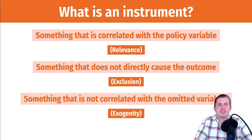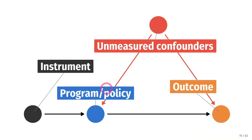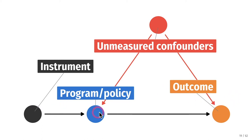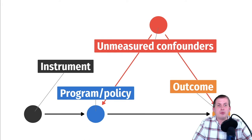To help wrap your heads around this graphically — because this is weird stuff — if we look at this DAG, you have some program or policy, education or whatever program you're thinking about. The program causes some sort of outcome; you have unmeasured confounders that you can't adjust for with inverse probability weighting or matching. An instrument is something that causes the program but does not cause the outcome directly — it only causes the outcome through the policy — and there's no connection between the unmeasured confounders and the instrument.